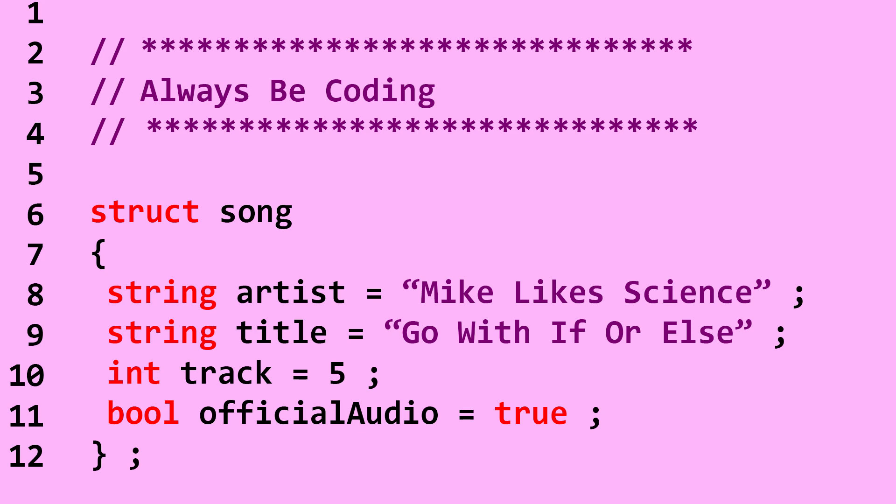You make choices every single day, like eat this vegetation or eat this cake. If it's time to celebrate, I'll go with the cake. Or else I guess asparagus is on my plate. Computer programs make choices as well.